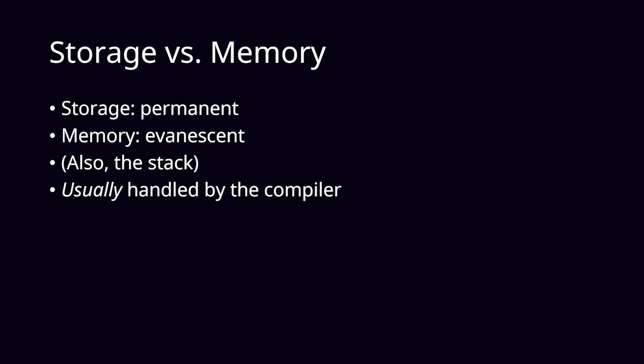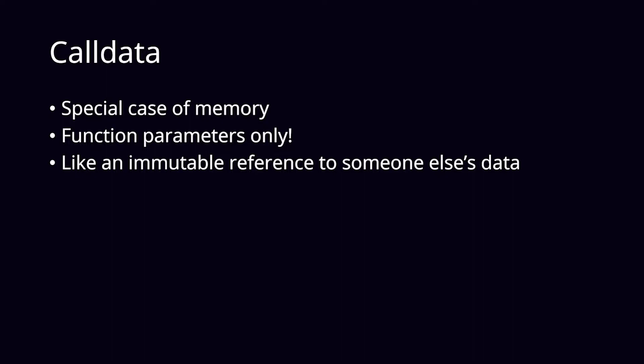Storage and memory are mostly handled by the compiler too — you only need to worry about them when dealing with complex data types like dynamic arrays or structs. Then we have call data. Call data is a special case of memory, only used in function parameters. It's like an immutable reference to someone else's data. It uses less gas, but the disadvantage is you can't modify it.